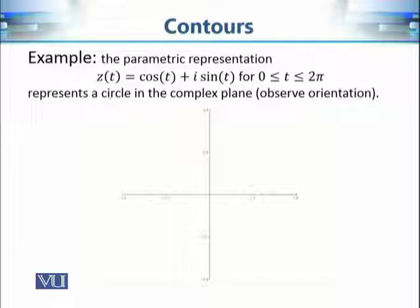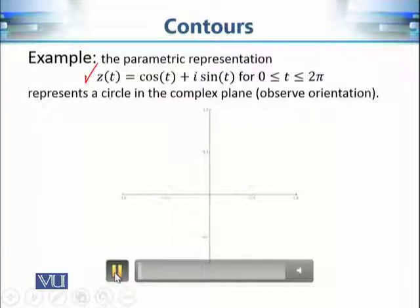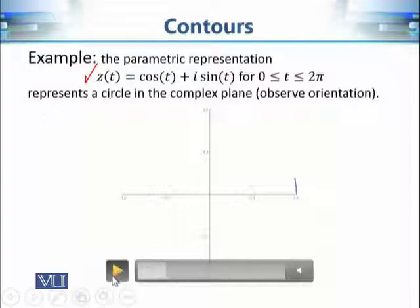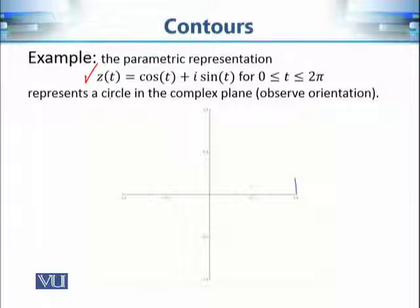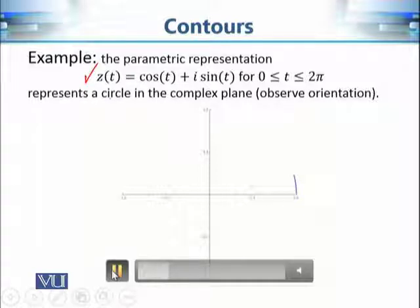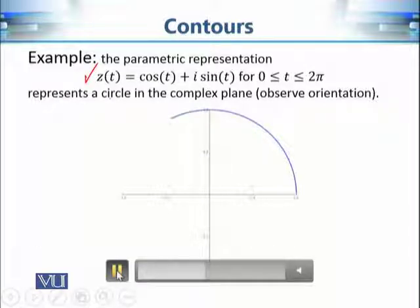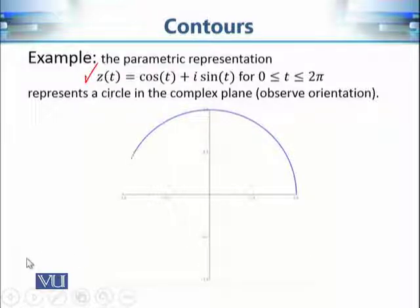Let's look at some examples. If we take x(t) = cos(t) and y(t) = sin(t) with t varying from 0 to 2π, we want to see which path z(t) represents in the complex plane. We start by calculating values — first at t = 0, sketch it, and then move on. As we increase t, a path begins to appear in the complex plane.